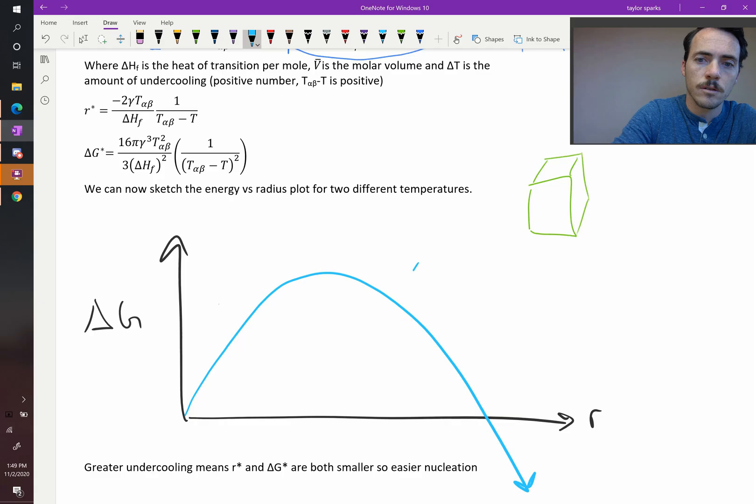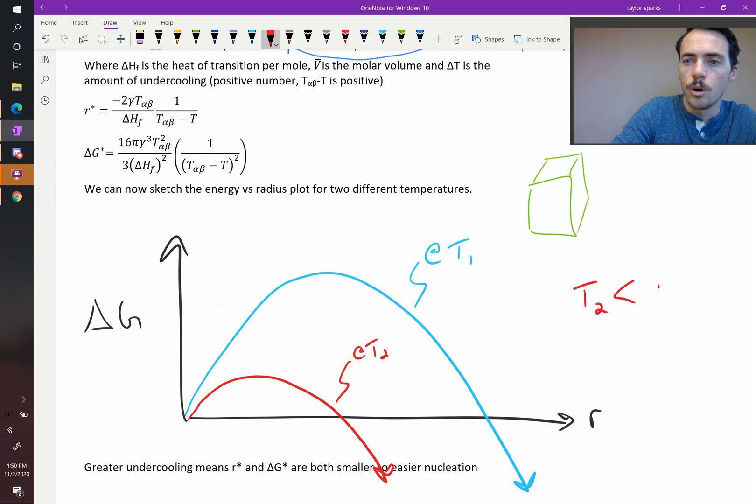We'll call this taking place at temperature 1. Now, at temperature 2, which is lower than 1, it's going to look like this. This one is at temperature 2, where T2 is lower than T1. So it's been supercooled even further. When you supercool it, look what's happening.